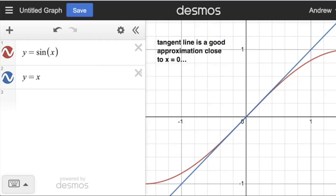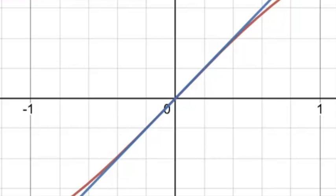It may deviate a bit as you look further away, but close to x equals zero, this blue curve and this red curve—the red curve is the original function and the blue curve is the tangent line—they're very close together close to this point.